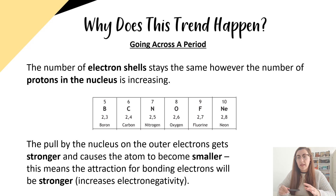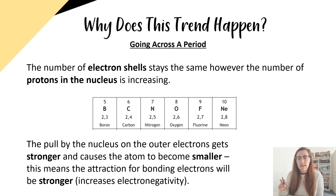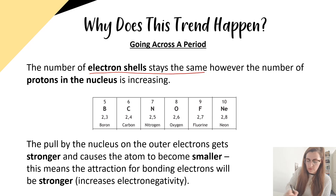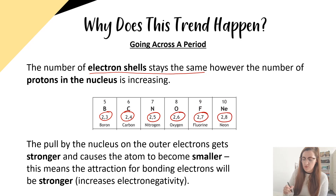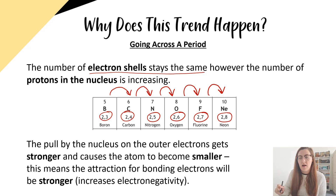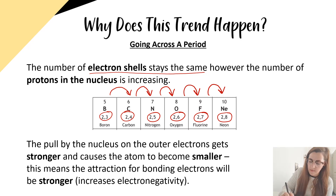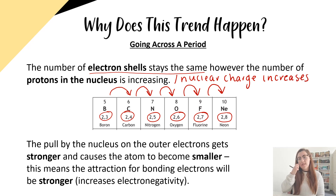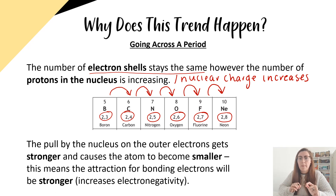At higher level we have to explain why this trend happens. Going across a period, the number of electron shells stays the same — all elements in a period have the same number of shells. However, every step to the right, elements gain a proton, so nuclear charge is increasing. Because nuclear charge increases, the outer electrons are pulled closer to the nucleus, causing covalent radius to decrease, and the attraction for bonded electrons becomes stronger.